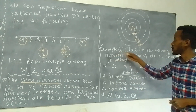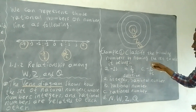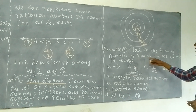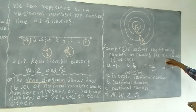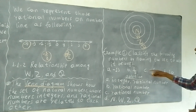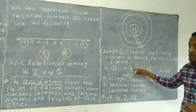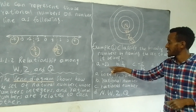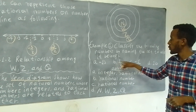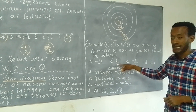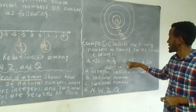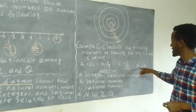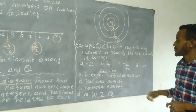Example 2: Classify the following numbers by naming the set to which each belongs. A: negative 13. B: 1 over 7. C: negative 5 over 76. D: 10.